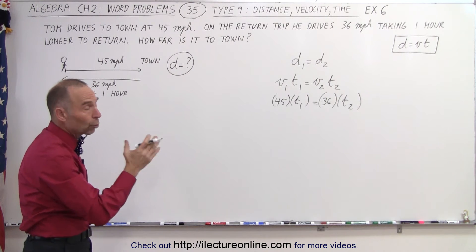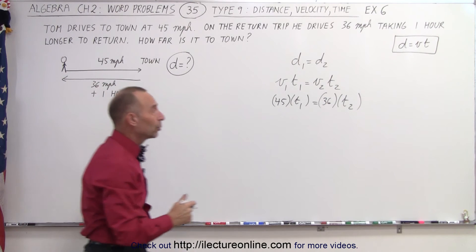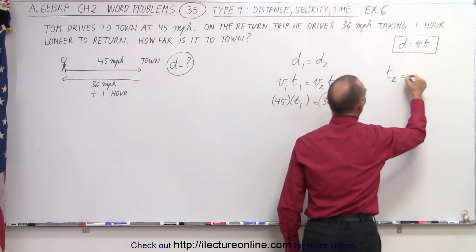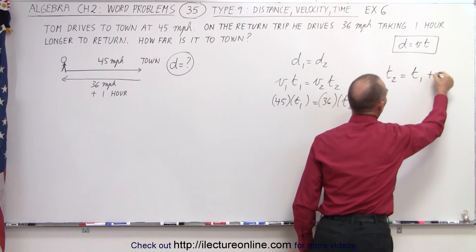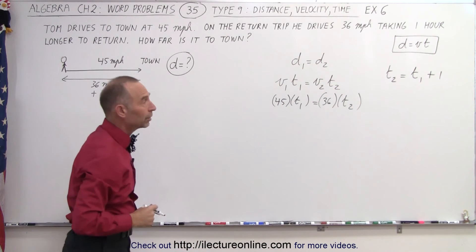We know that it took one hour longer to come back than to go to town. In other words, we know that t₂, the time to go back from town back home, was one hour longer than t₁. So therefore, it's t₁ plus one hour longer. So the return trip took one hour longer.